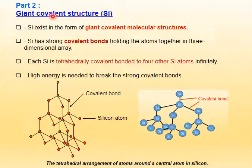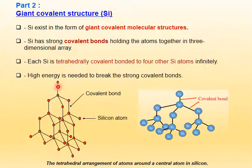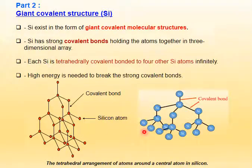Part two: giant covalent structure — silicon. Silicon exists in the form of a giant covalent molecular structure with strong covalent bonds holding the atoms together in a three-dimensional array. One silicon atom connects with another silicon atom via covalent bonding. Each silicon is tetrahedrally covalent-bonded to four other silicon atoms, extending infinitely. High energy is needed to break down the strong covalent bond. Both diagrams show the tetrahedral arrangement of atoms around a central atom in silicon.